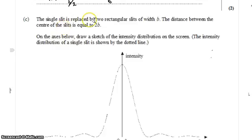The last part says that the single slit is now replaced with two rectangular slits, each with a width of b. The distance between the center of the slits is 2b.